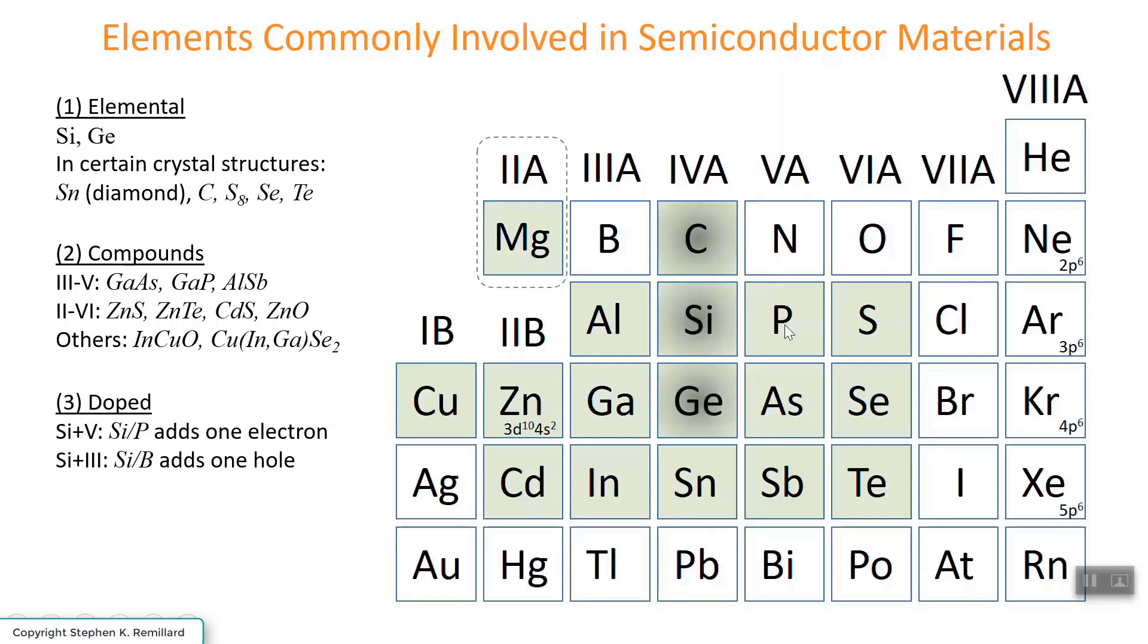You will add an electron because a phosphorus atom has one more electron than silicon. And so in order for a phosphorus to go into the matrix, the crystal structure of the silicon, and behave chemically like a silicon atom, it has to lose an electron. So it does, and that electron becomes available for conductivity.